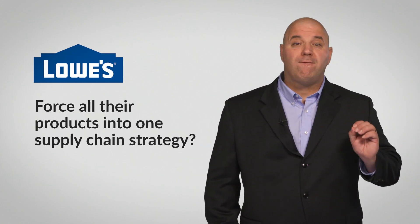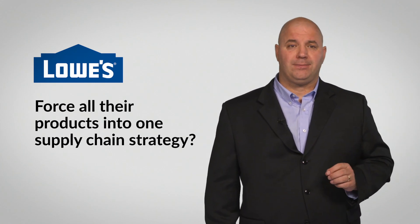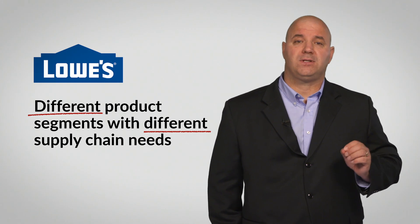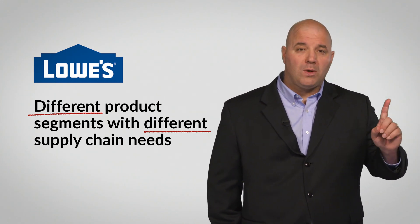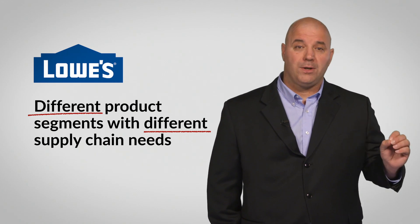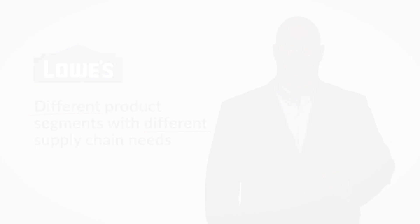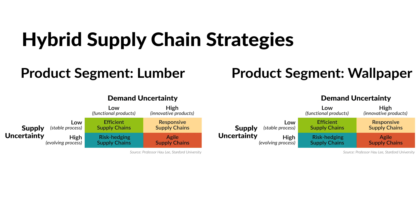What should Lowe's do? Should they force all their products into one supply chain strategy? Absolutely not. Lowe's recognizes they have different product segments with different supply chain needs. If they choose just one strategy, then some product segments will flourish, but others will rapidly decline. The reality is Lowe's needs a hybrid supply chain strategy. Lowe's needs to carefully segment their products based on supply uncertainty and demand uncertainty characteristics, then align each segment with the appropriate quadrant in Professor Lee's uncertainty matrix. This means Lowe's will need more than one type of supply chain strategy to meet the diverse needs of their broad customer base.